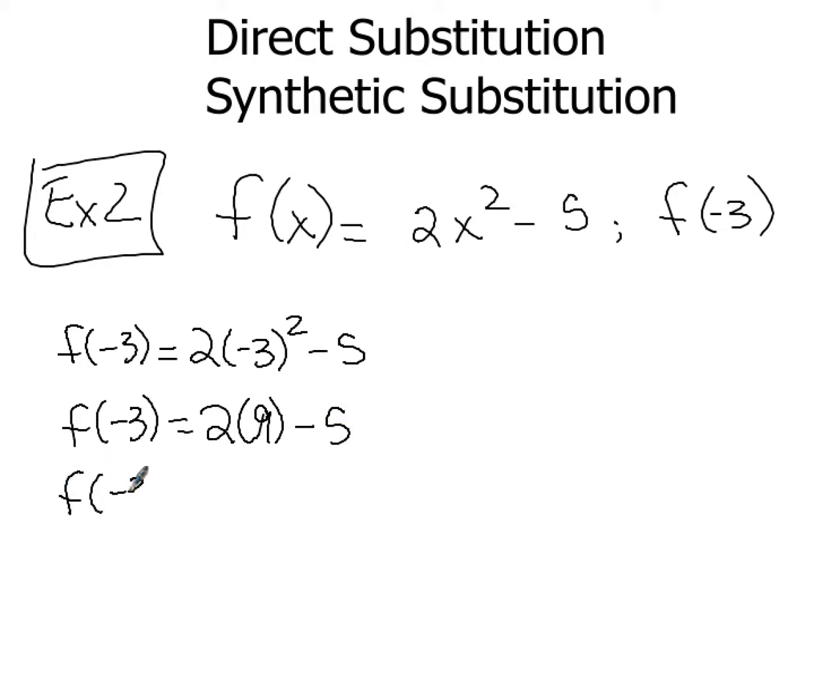Now taking our time, writing everything down because that's what good math students do. You take your time and you show your reasoning and you show all your steps. 2 times 9 is 18 - 5 and then f(-3) ends up giving us a value of 13. So that's what we get when we use direct substitution.